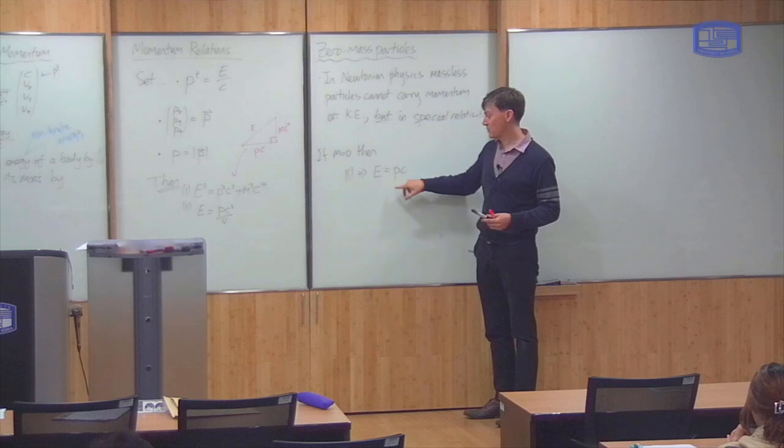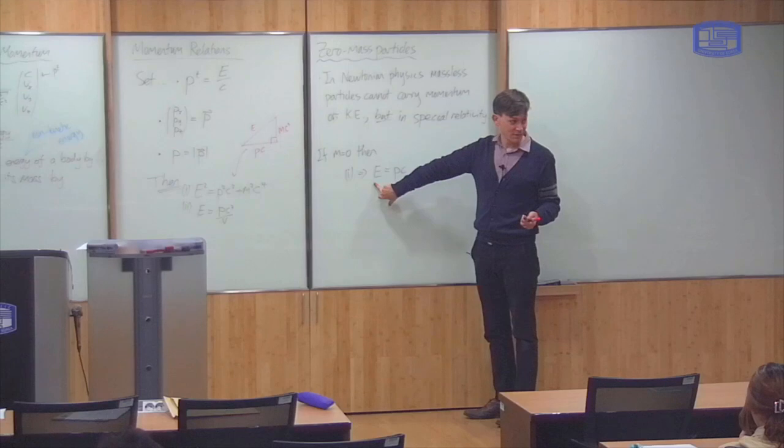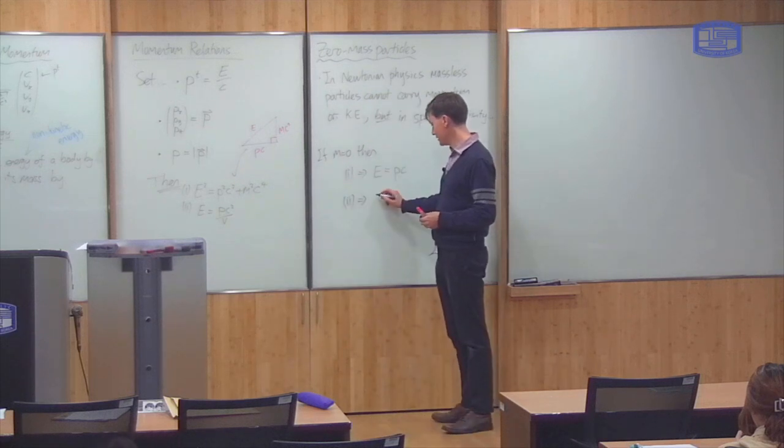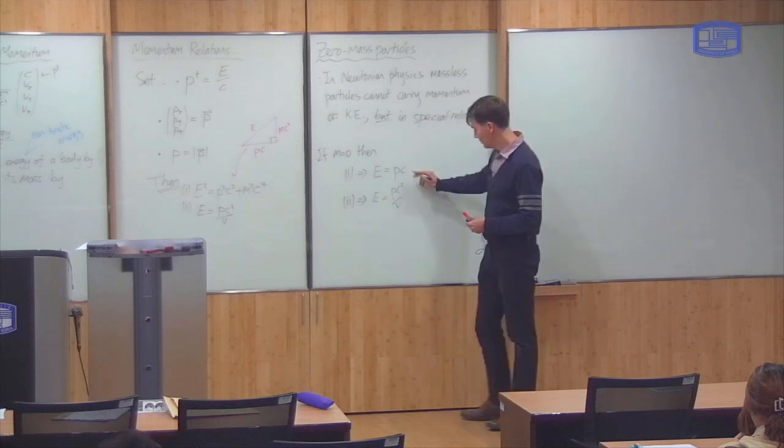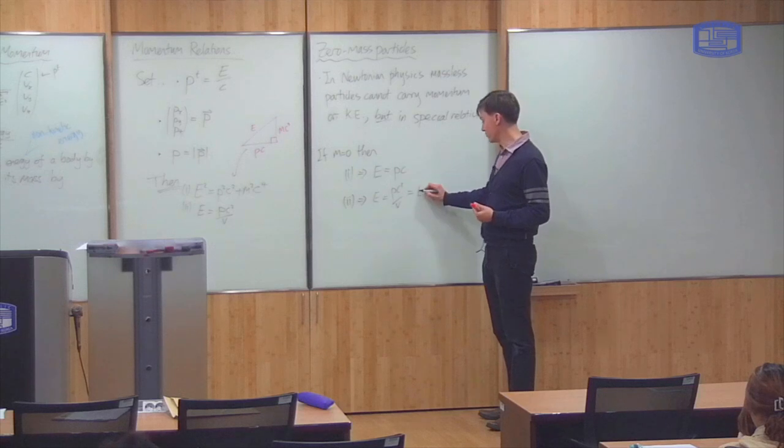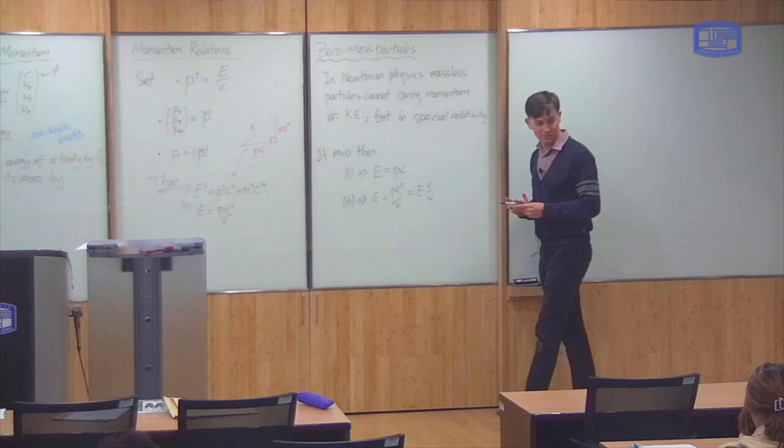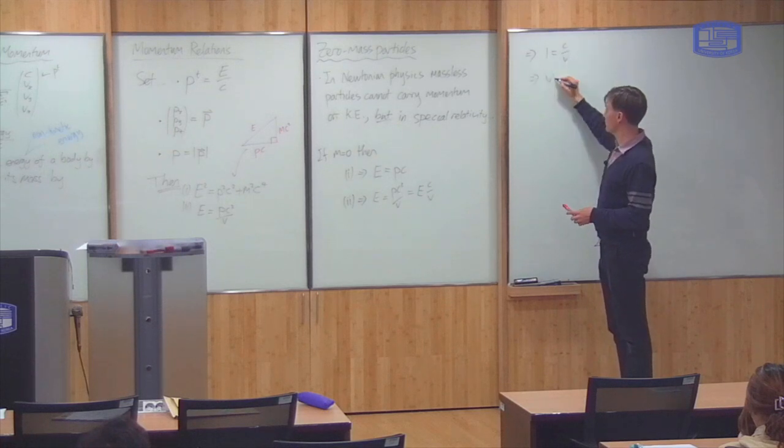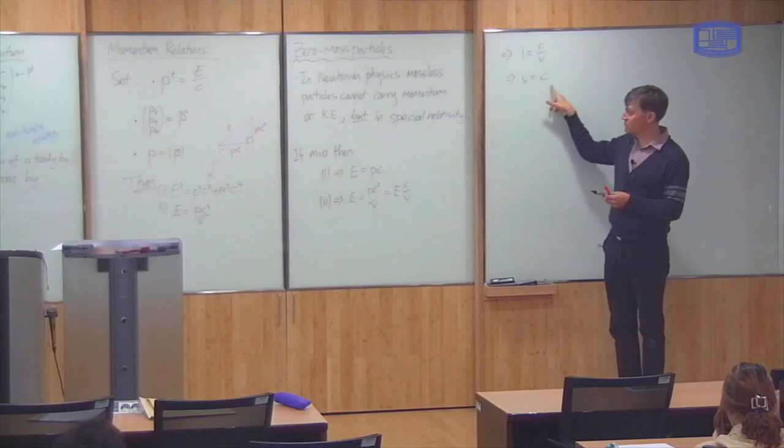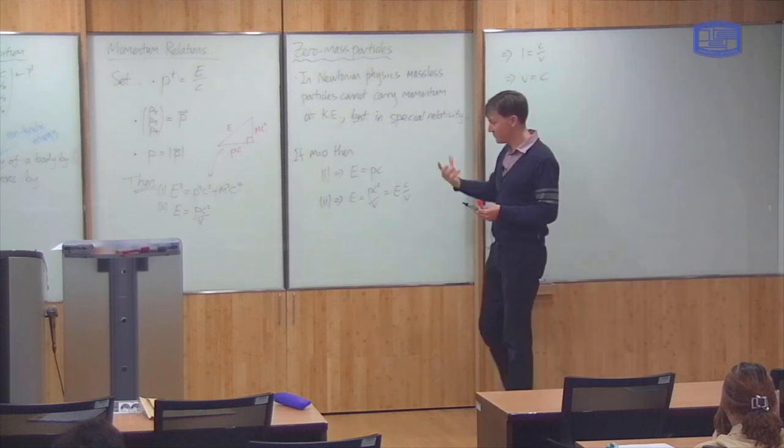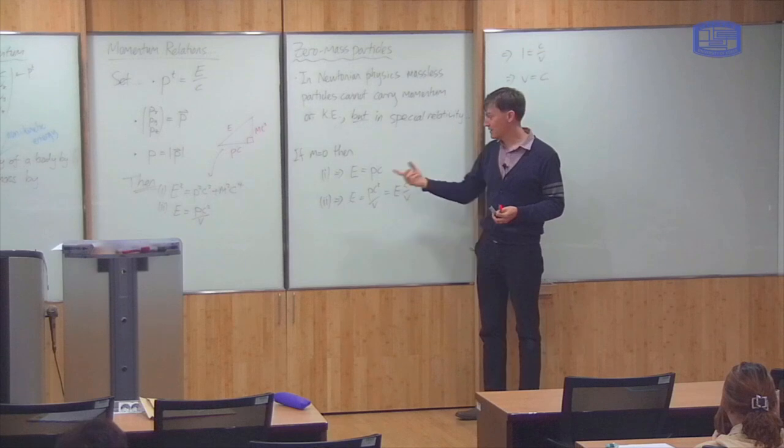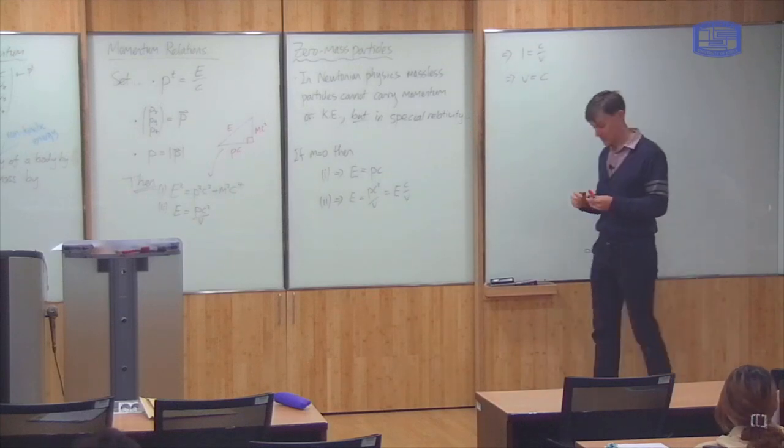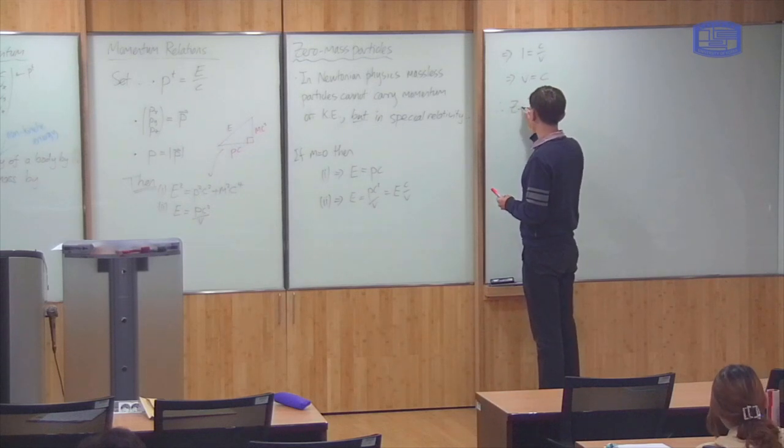So that means that there's a simple relationship between the momentum a zero mass particle can carry and the energy it has. And the second thing then, from here, implies that E is equal to pc squared over v, but then p times c is just E, so this is equal to E times c over v. But then you can cancel the E's, so this means that one is equal to c over v, which means that v equals c. That means that the particle must travel at the speed of light. So in special relativity, zero mass particles can exist, they can carry energy and momentum related by this equation, but they must travel at the speed of light.